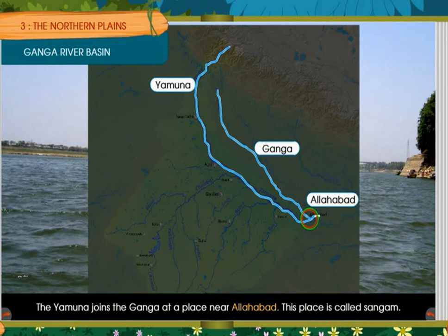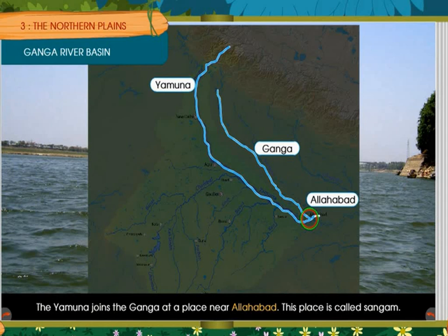After reaching West Bengal, the Ganga divides into several branches. Many branches join Bangladesh, our neighboring country. In India, the main branch of the Ganga is the Hooghly, which passes through Kolkata, the capital of West Bengal. The branch of the Ganga in Bangladesh is known as the Padma.